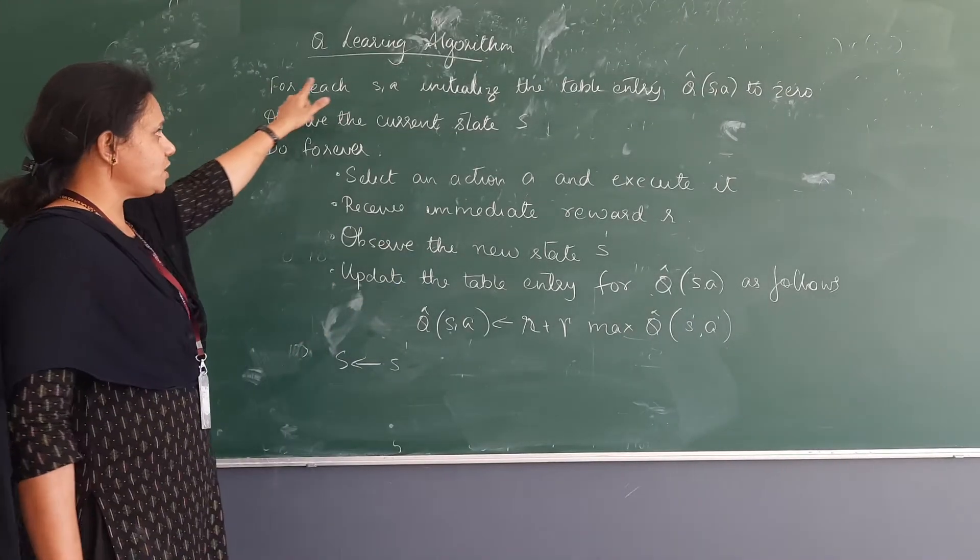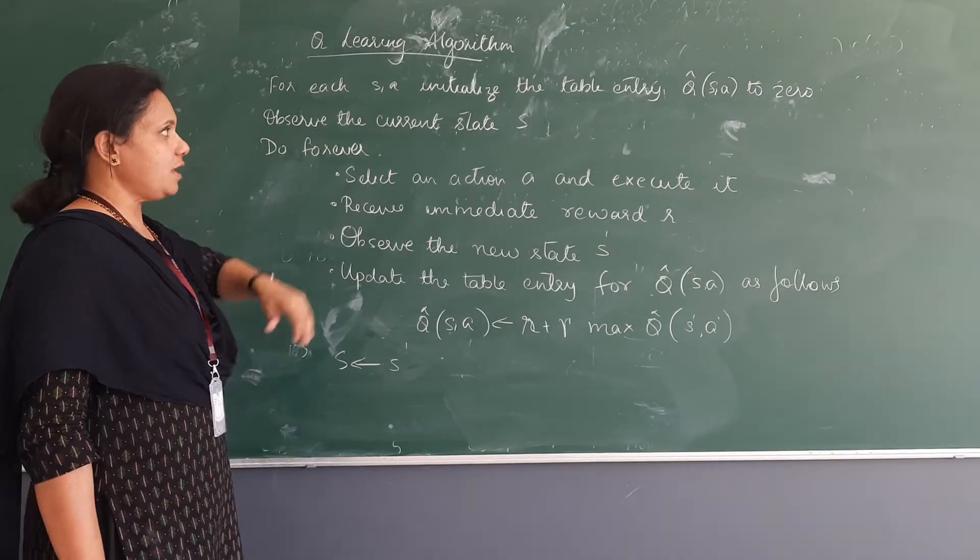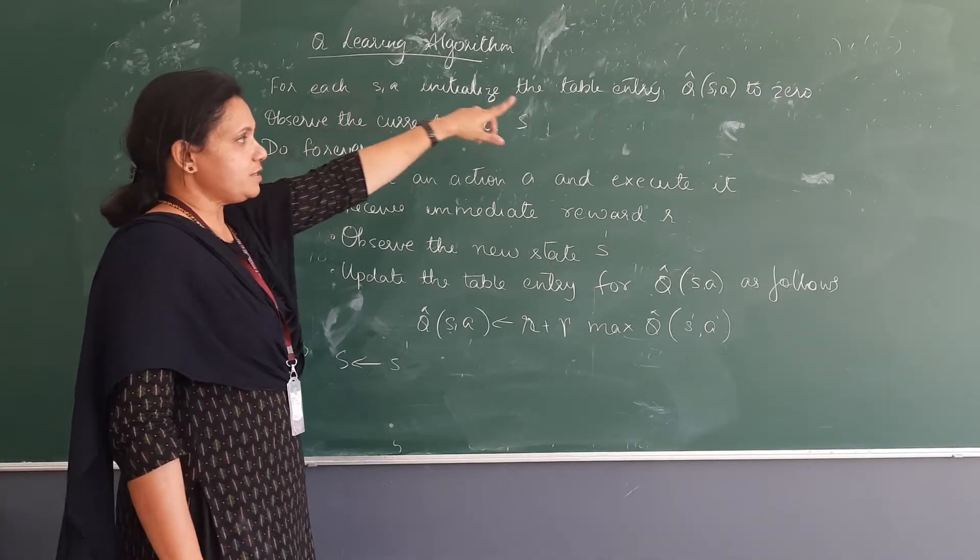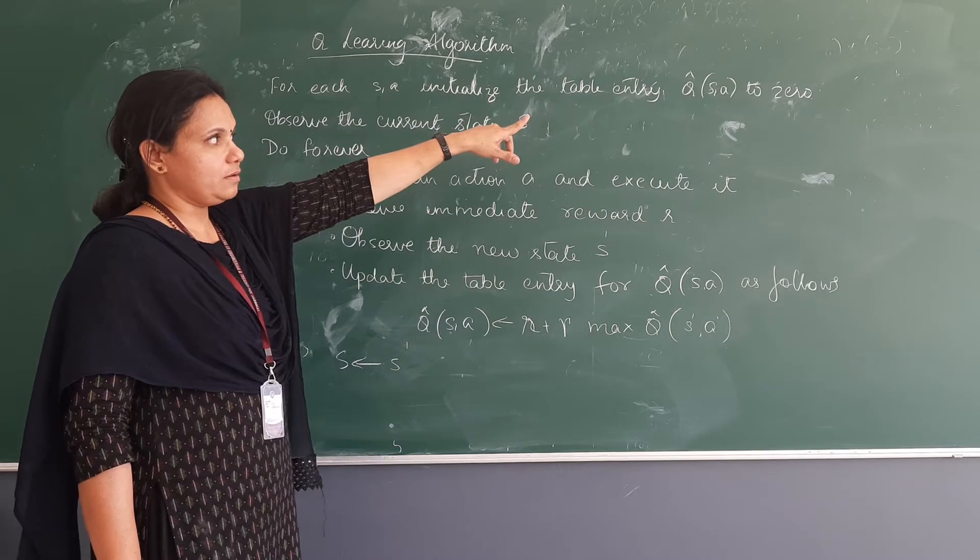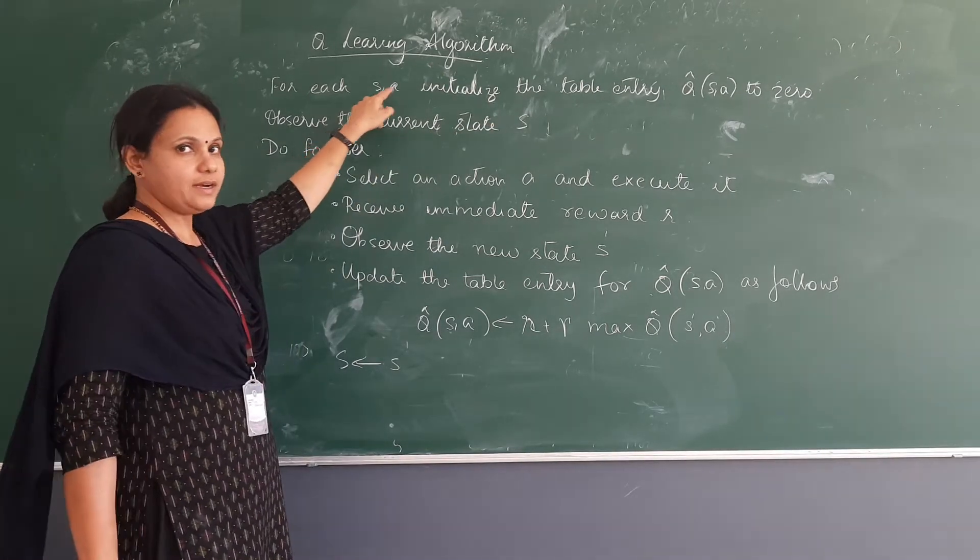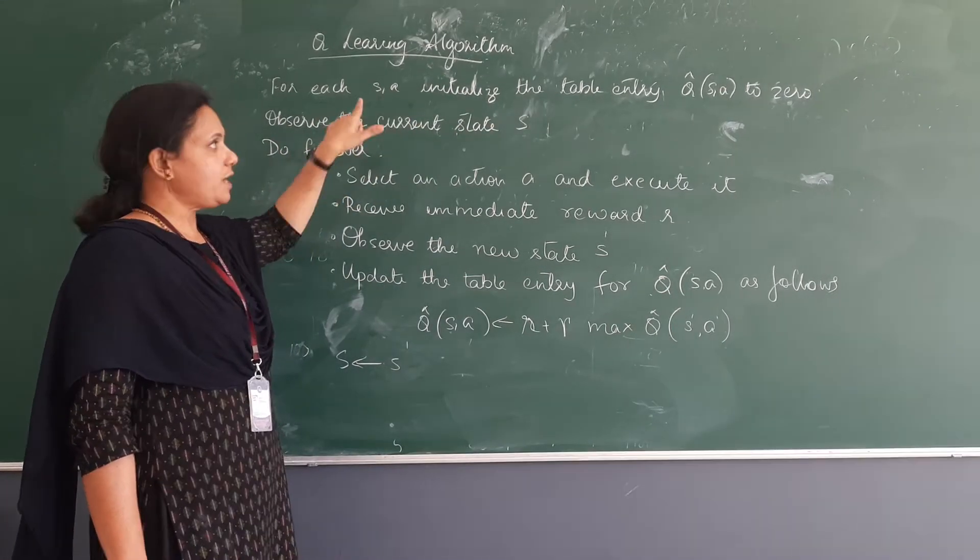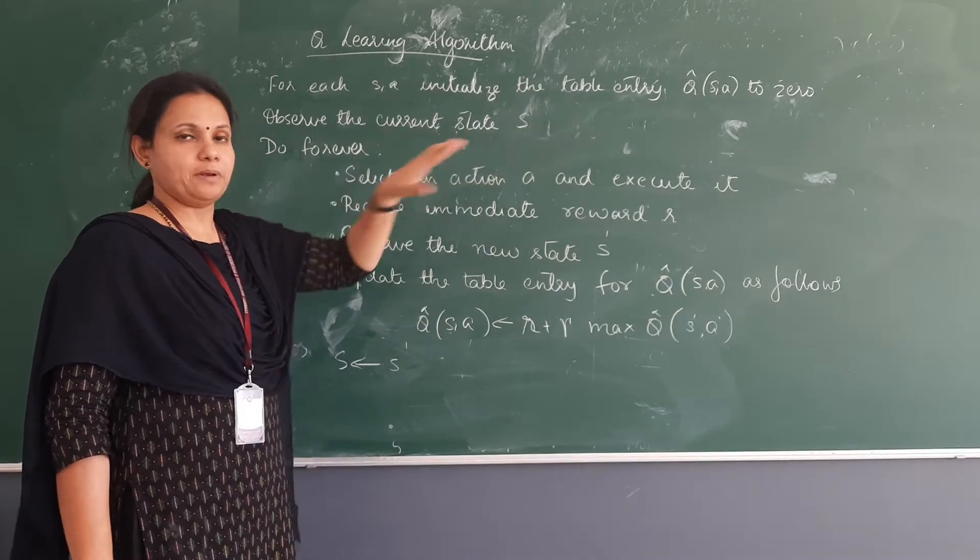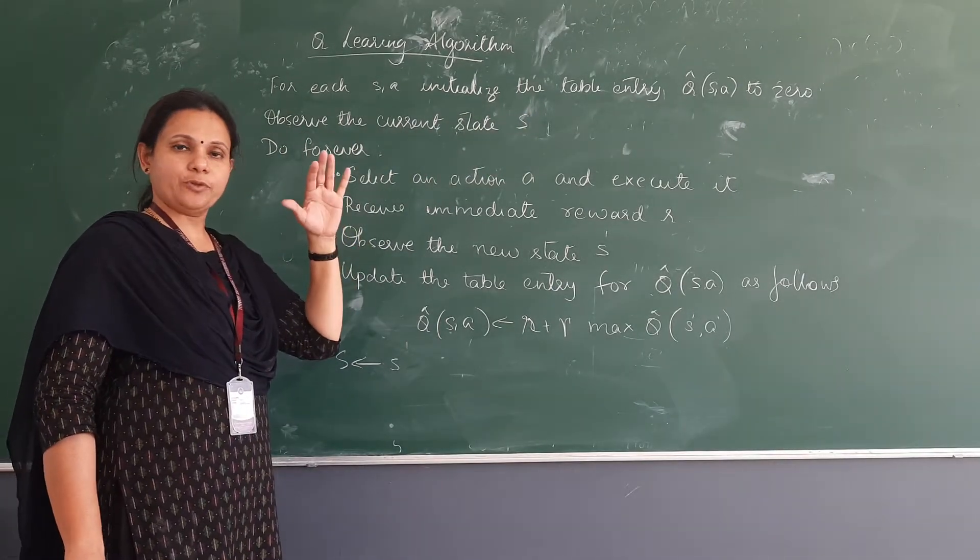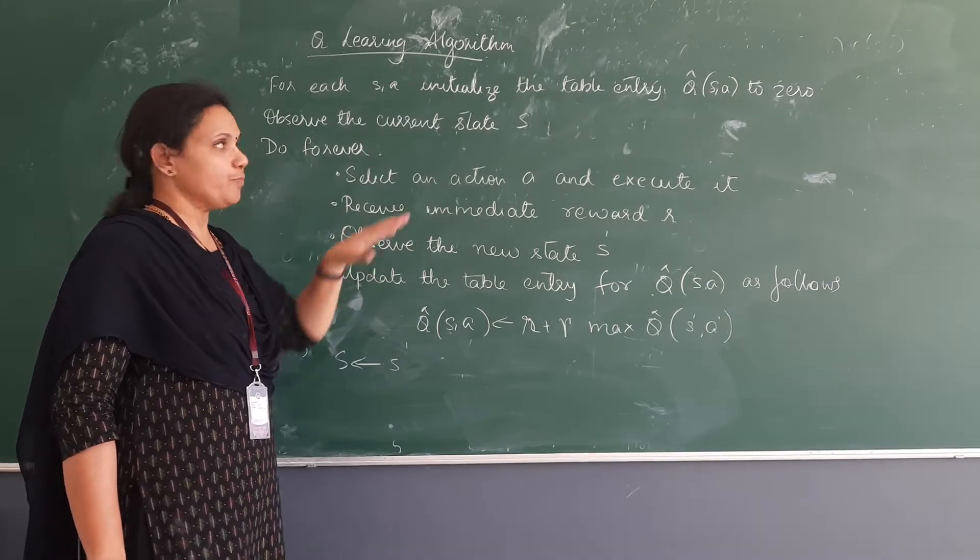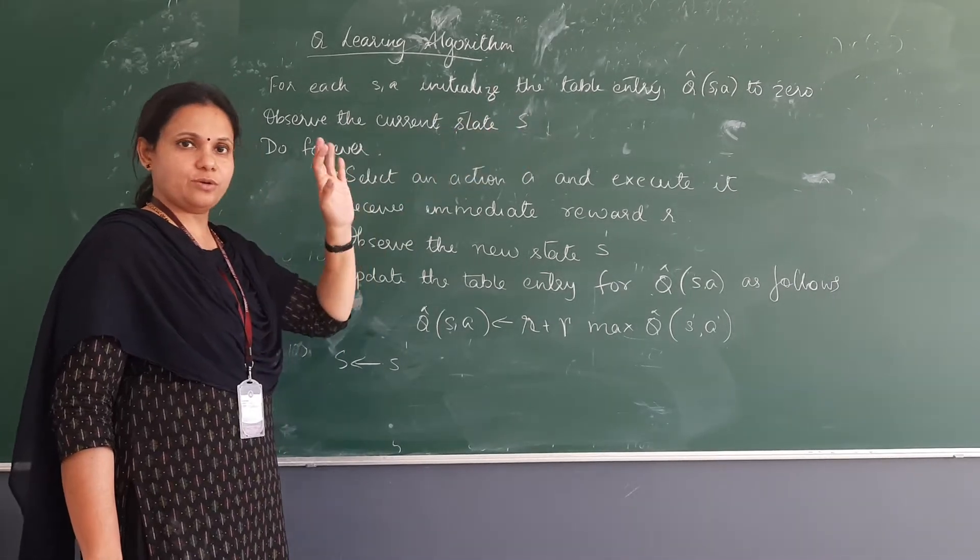So what we did initially, for each S-A, initialize the table entry. S is what you call the state, A is the action. So for each state-action, initialize the Q-table. Initially, we checked the Q-table was completely, or the Q-matrix was completely zero. So initialize the Q-matrix to zero.